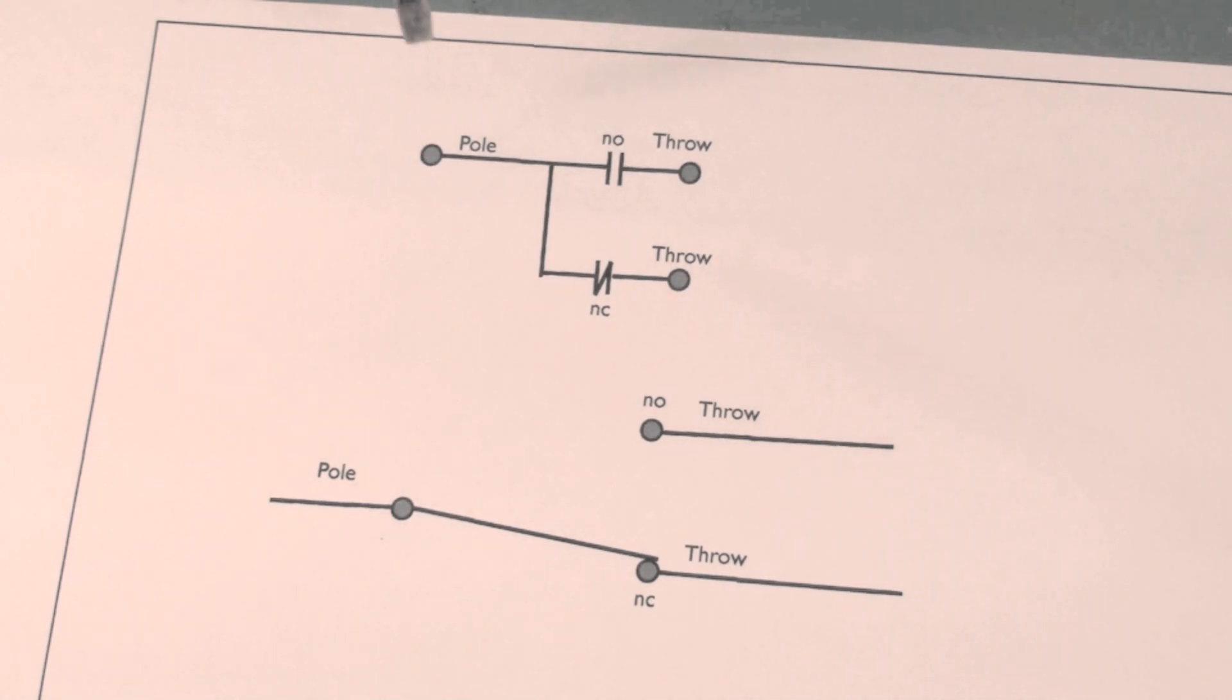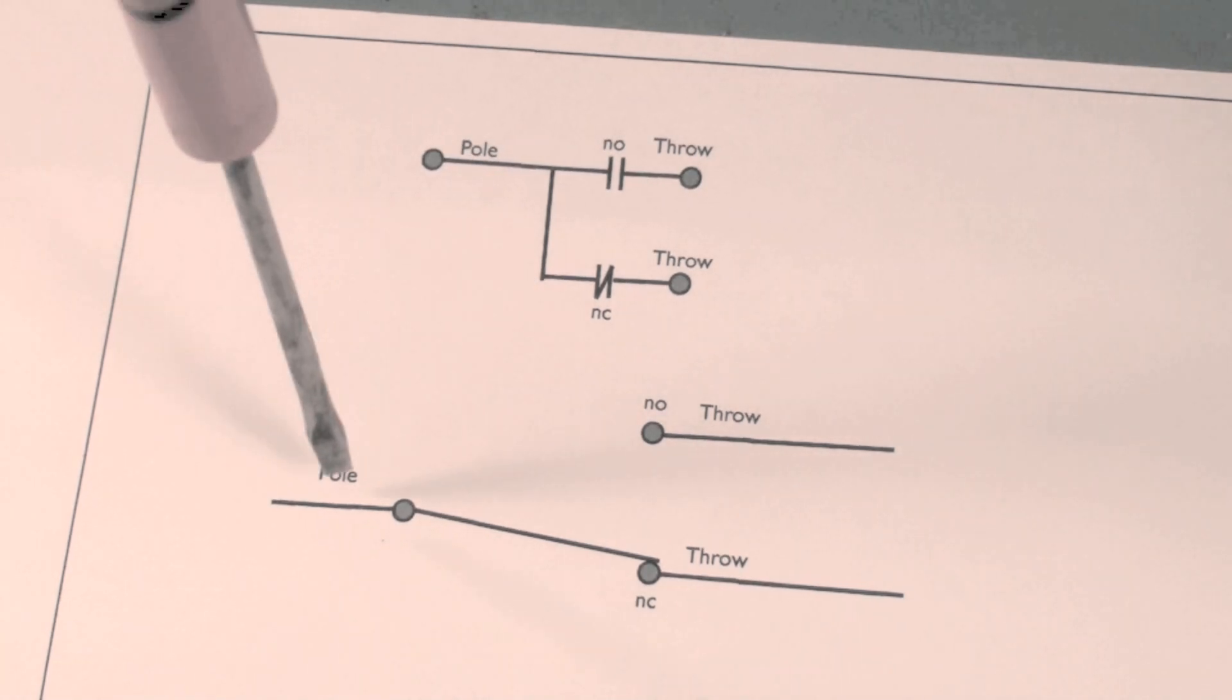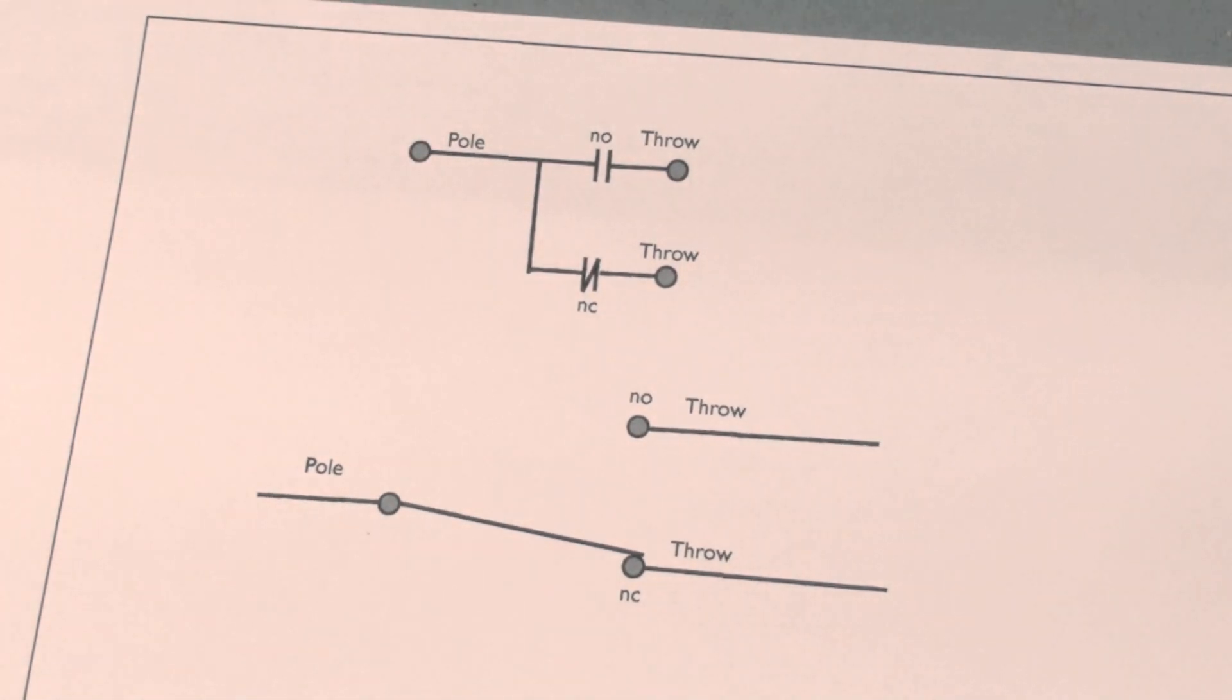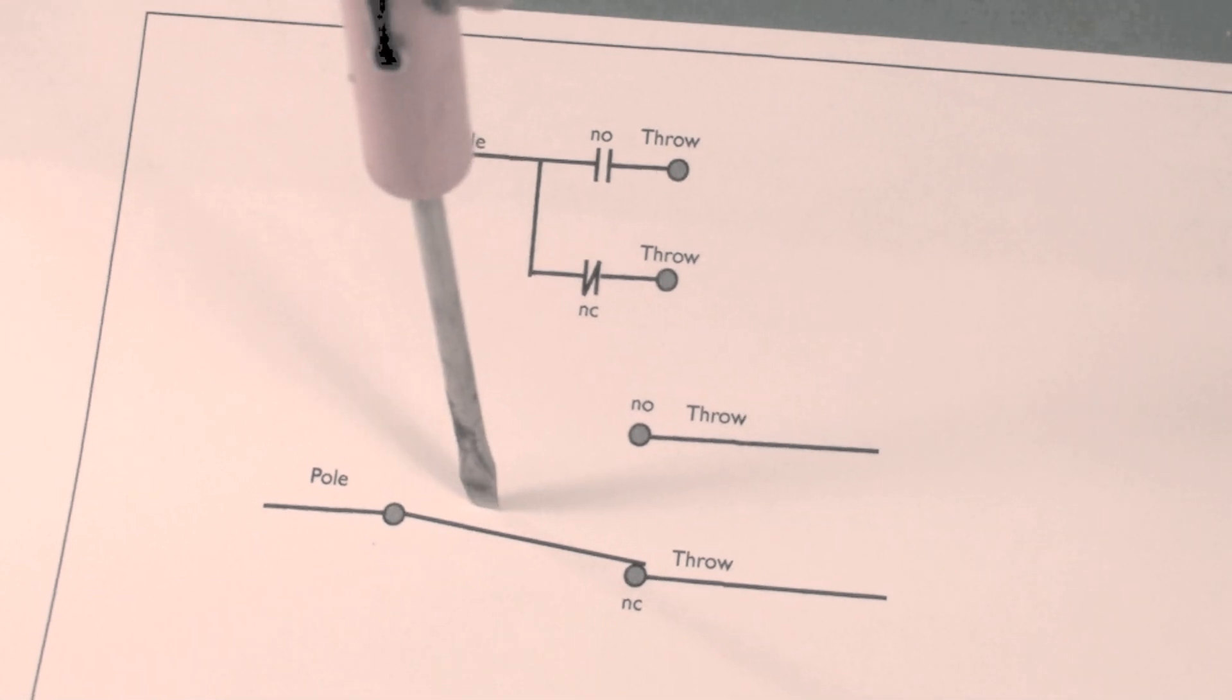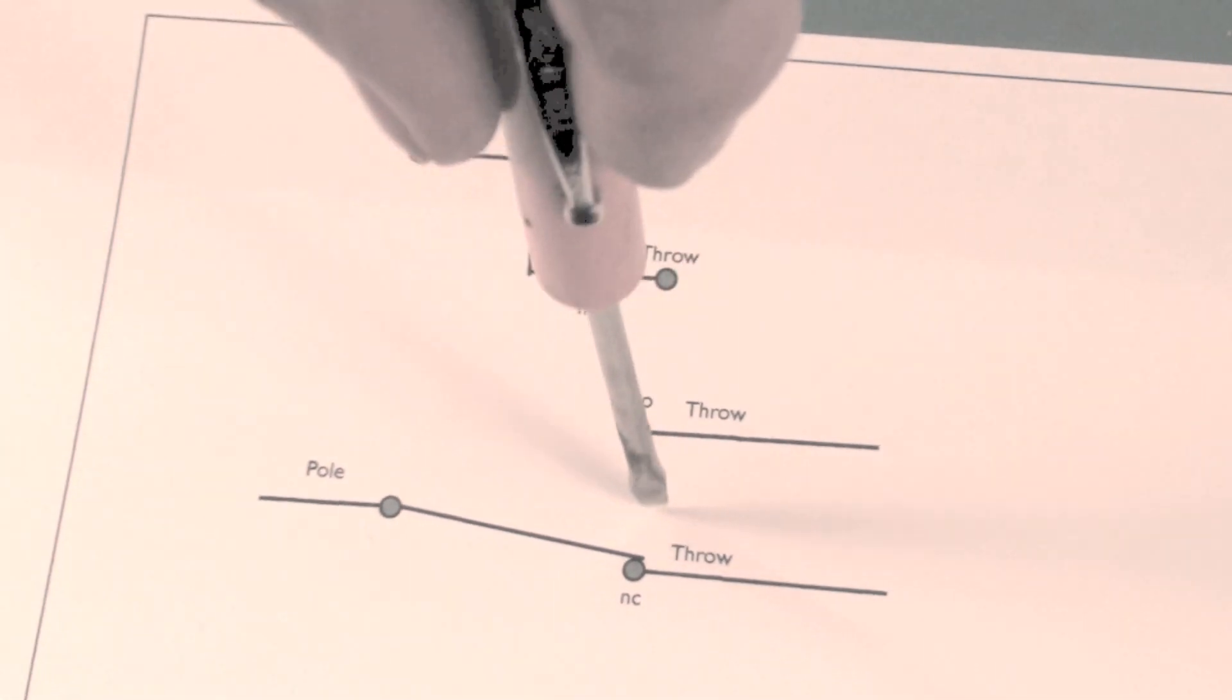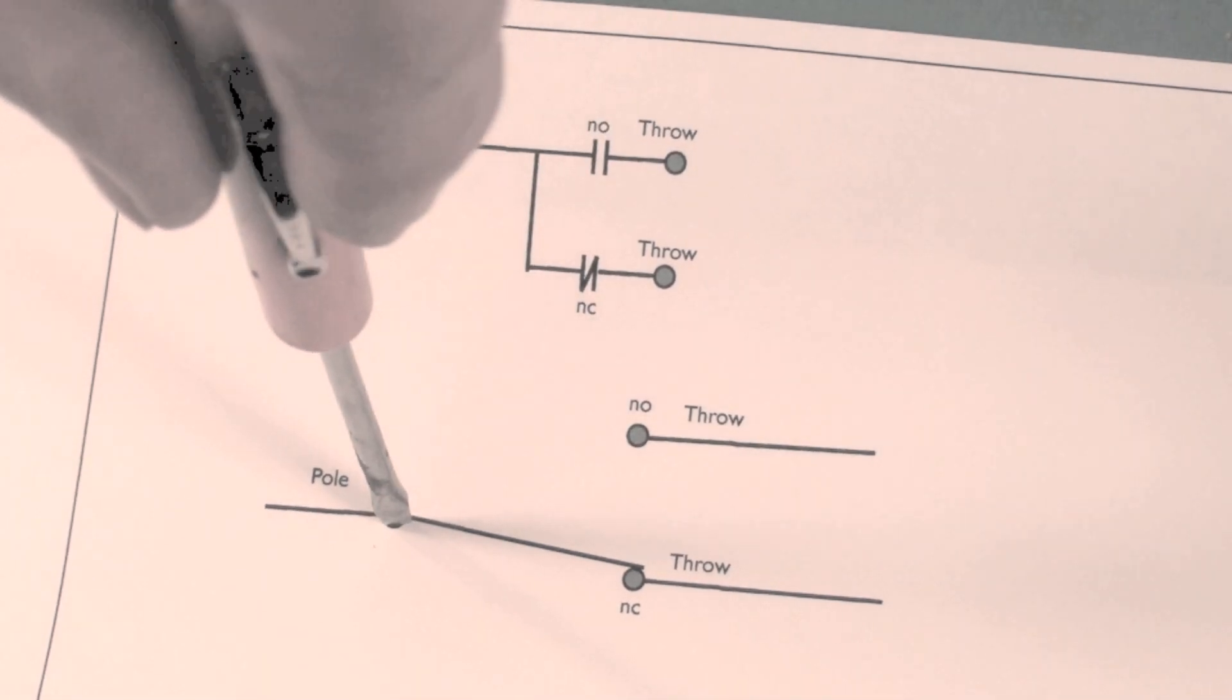When I say single pole, here's my pole in this representation down here. My pole is right here. That's the thing that moves back and forth. This one is a little easier to tell what it would do when it switches because this lever here is going to move up here and pivot back here.